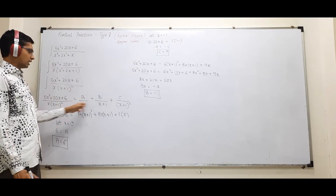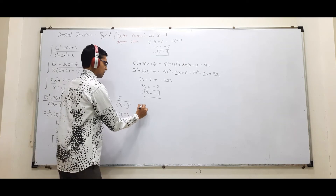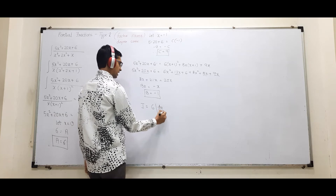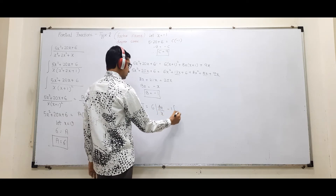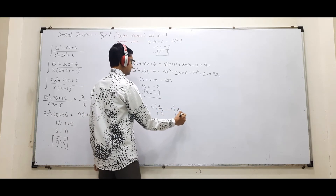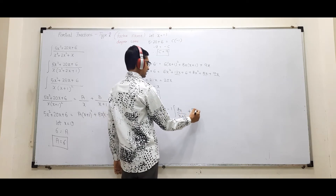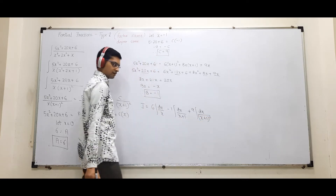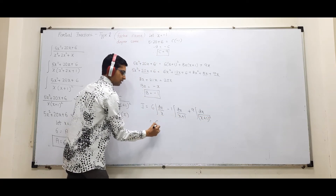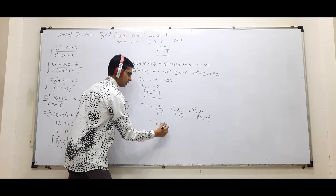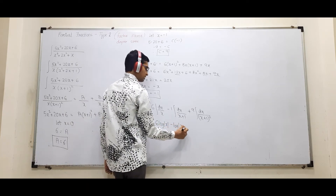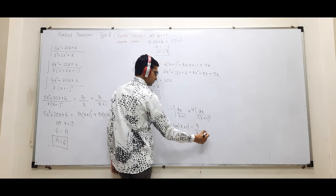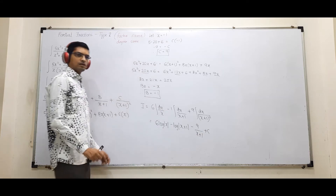Now integrate with A = 6, B = -1, C = 9: ∫(5x²+20x+6)/[x(x+1)²]dx = 6∫dx/x - ∫dx/(x+1) + 9∫dx/(x+1)². This gives 6·log|x| - log|x+1| + (-1/(x+1)) plus constant. The last term: integration of dx/(x+1)² gives -1/(x+1).